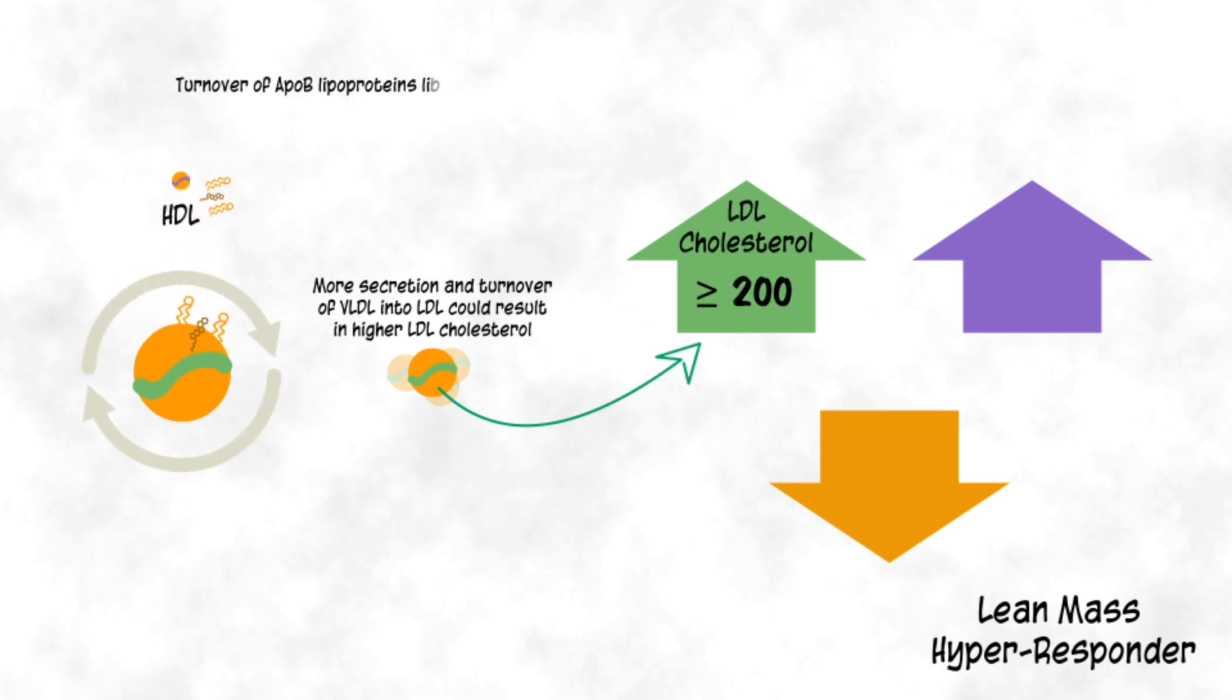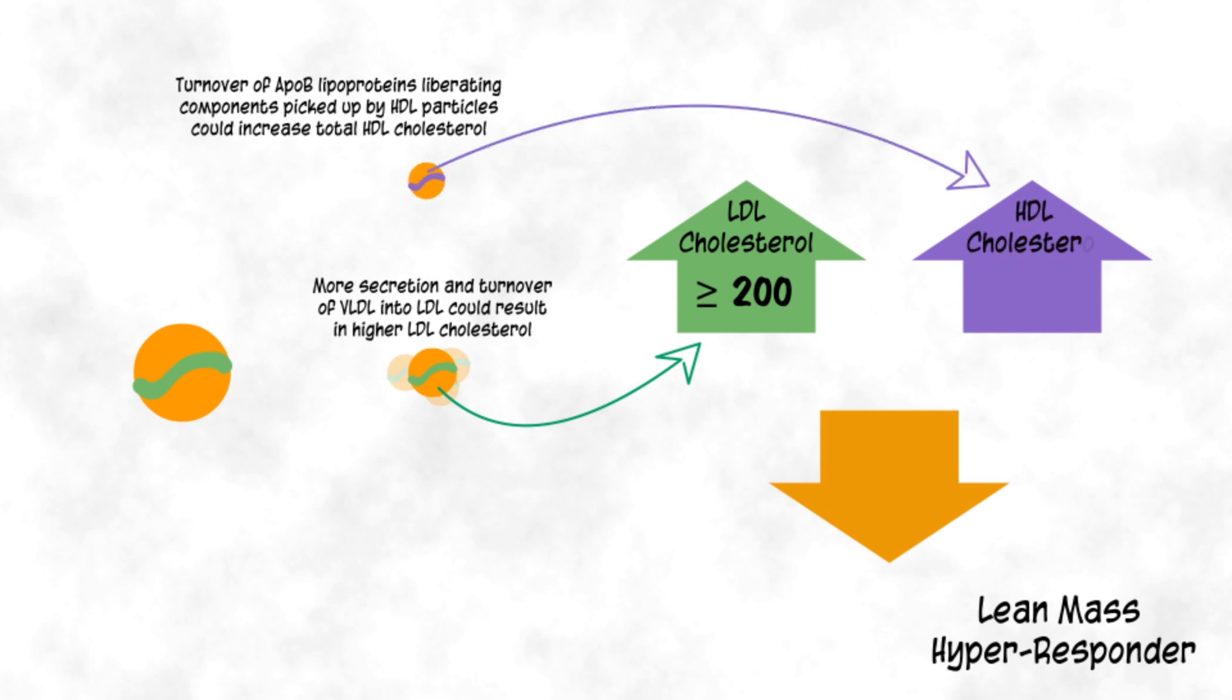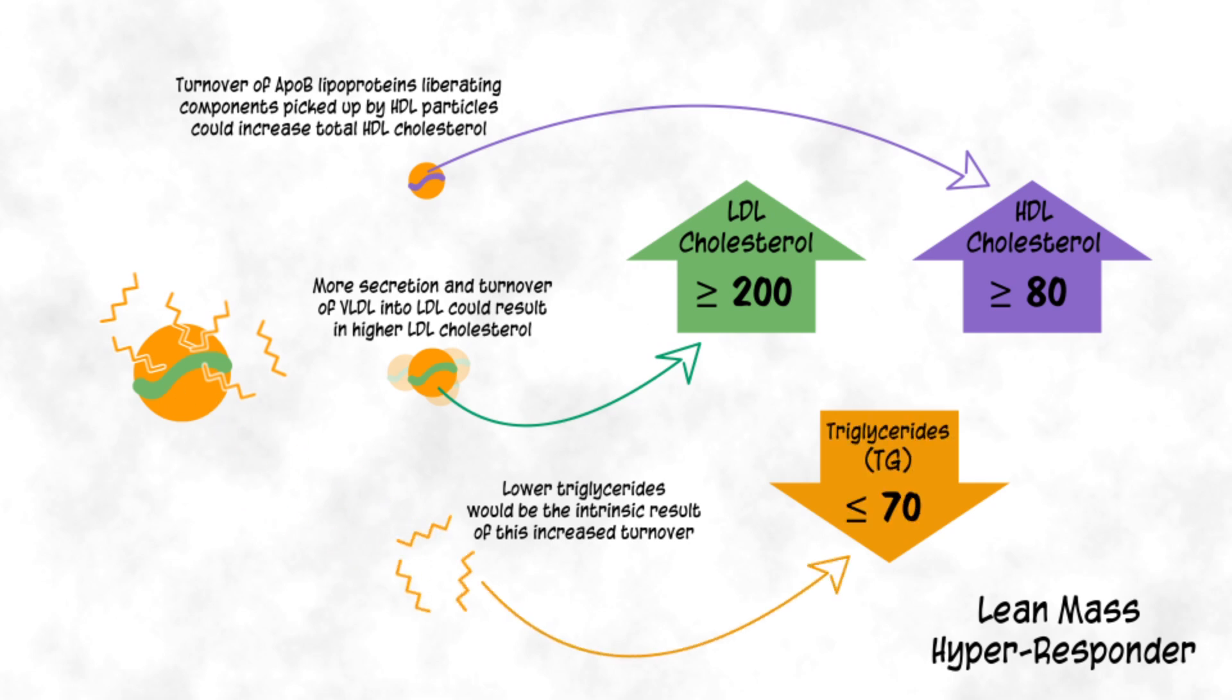Given the turnover also liberates surface components of VLDL with cholesterol, and these are picked up by HDL particles, it's likewise unsurprising to see higher serum HDL cholesterol as well. And finally, lower triglycerides are the intrinsic result of this turnover that generates the parallel increases in LDL cholesterol and HDL cholesterol.